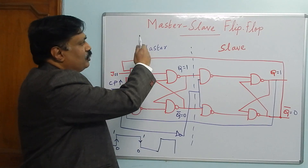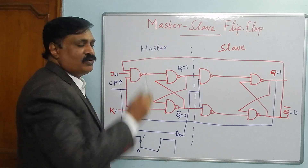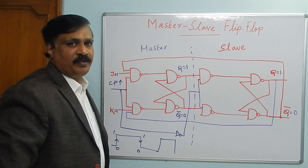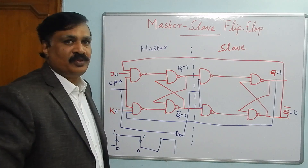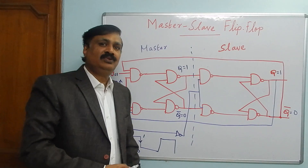The race around condition is eliminated or removed in the case of a master-slave flip-flop. Thank you. If you have any doubt, please ask.